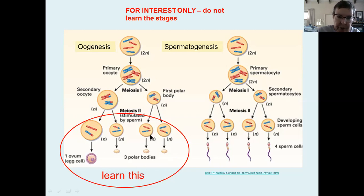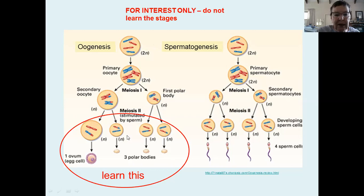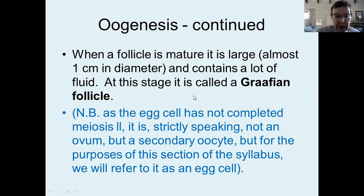This is what you have to know. You have to understand, just as you did with spermatogenesis, how these stages tie in with the stages you're supposed to know about meiosis — but don't learn the names. The follicle grows and grows. When it's mature, it's large — almost a centimeter in diameter — contains a lot of fluid, and it's called a Graafian follicle, with a capital G because it's named after someone.